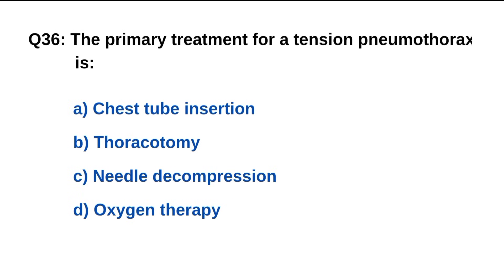Question number 36. The primary treatment for a tension pneumothorax is? The right option is C: Needle decompression.